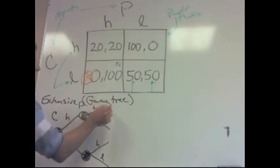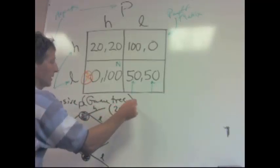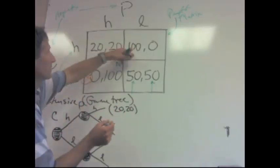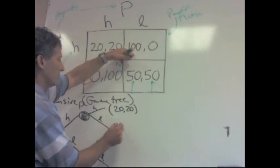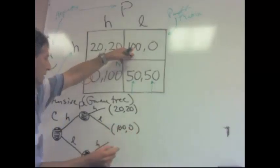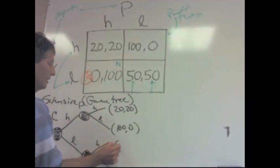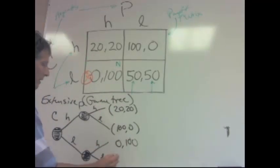The outcomes are here at the end. If Coke and Pepsi both go high, it's 20-20. If Coke goes high and Pepsi goes low, then it's 100-0. If Coke goes low and Pepsi goes high, 0-100. And then 50-50.